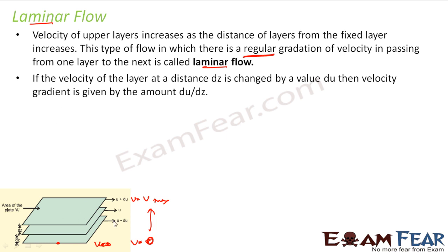If the velocity of a layer at a distance dz is changed by a value du, then the velocity gradient is du/dz. For example, if one layer has velocity u and the next layer has velocity u + du, and the distance between them is dz, then the change in velocity with respect to distance — the velocity gradient — is du/dz.